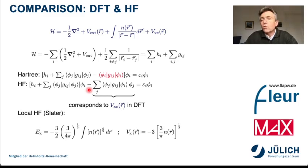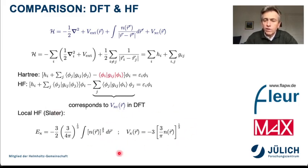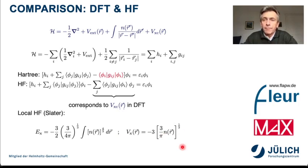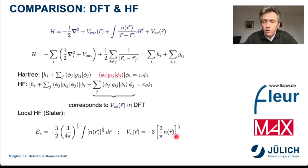You can make a local approximation. Slater did this already before the invention of DFT, arriving at an expression where the exchange potential is some prefactor times the density to the power of one third. This was used quite successfully in the early days of density functional theory, sometimes with a little bit of scaling, to construct simple local density exchange-correlation potentials.